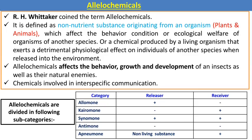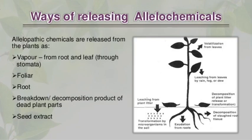Next is allelochemicals, used in interspecific communications. It is a non-nutrient substance originating from an organism that affects the behavioral conditions or ecological welfare of organisms of another species. Allelochemicals affect the behavior, growth, and development of insects. The term 'allelochemicals' was given by scientist R.H. Whittaker. There are five types: allomones, karomones, synomones, antimones, and apneumones.